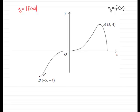So basically, any part of the graph below the x-axis gets mirrored, gets reflected in the x-axis.